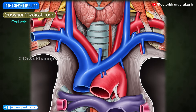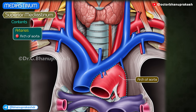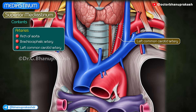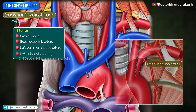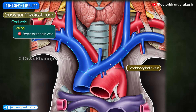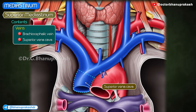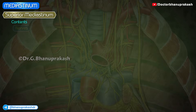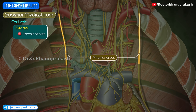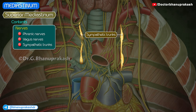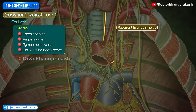Contents of the superior mediastinum. Arteries: arch of the aorta, brachiocephalic artery, left common carotid artery, and left subclavian artery. Veins: right and left brachiocephalic veins, upper half of the superior vena cava, and left superior intercostal vein. Nerves: phrenic nerves (right and left), vagus nerves (right and left), sympathetic trunks and cardiac nerves (right and left), and left recurrent laryngeal nerve.